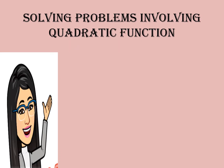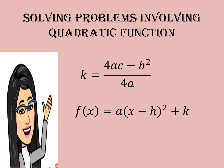In this topic, the two most commonly used formulas are K is equal to (4AC minus B squared) all over 4A, which I discussed in my previous discussions, and f(x) is equal to A times the square of (x minus H) plus K, where we can easily determine the vertex of the parabola.